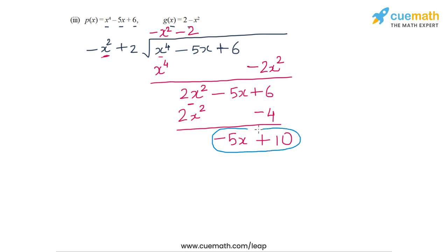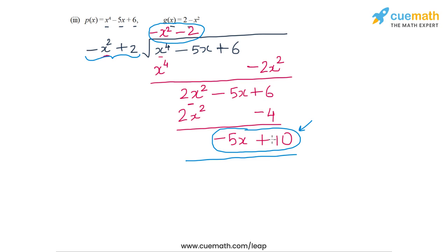The degree of the remaining part -5x + 10 is 1, which is less than the degree of the divisor which is 2, so the division process terminates. The quotient polynomial is -x² - 2 and the remainder polynomial is -5x + 10, a linear polynomial. That completes part three and question one.